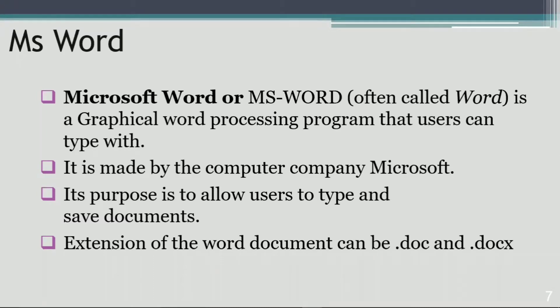Today we are going to start with the topic MS Word. MS Word is an application software, or a word processor software, which is used to create documents — letters, reports, files. You can add images, charts, shapes, and different SmartArt images into those documents. It is a word processor software used to create documents, and it is made by the company Microsoft.